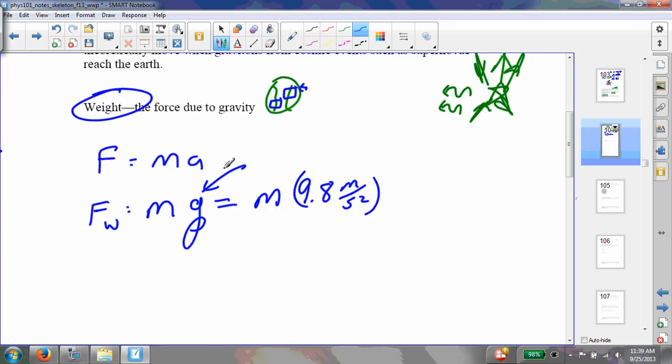Now, remember that we call g positive 9.8, even though the acceleration due to gravity is in the negative direction. The way we'll reconcile that is that whenever we draw our force weight vectors, as we've been doing already, those vectors will point downward.